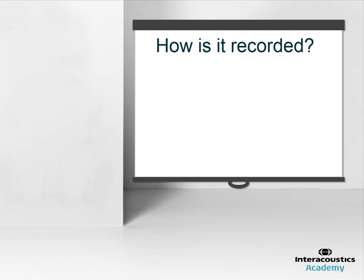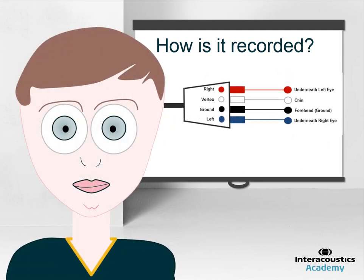The response is then recorded using surface electrodes at four sites on the face. The most common electrode montage is to measure from the chin, forehead and underneath each eye.